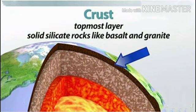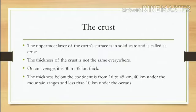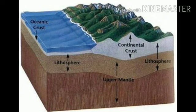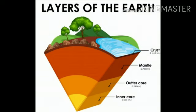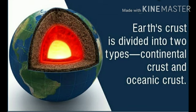The uppermost layer of the earth's surface is in a solid state and is called the crust. The thickness of the crust is not the same everywhere. On average, it is 30 to 35 kilometers thick. The thickness below the continents is from 16 to 45 kilometers, about 40 kilometers under mountain ranges, and less than 10 kilometers under the oceans. The crust is the thinnest of all the layers when compared to the mantle and the core.